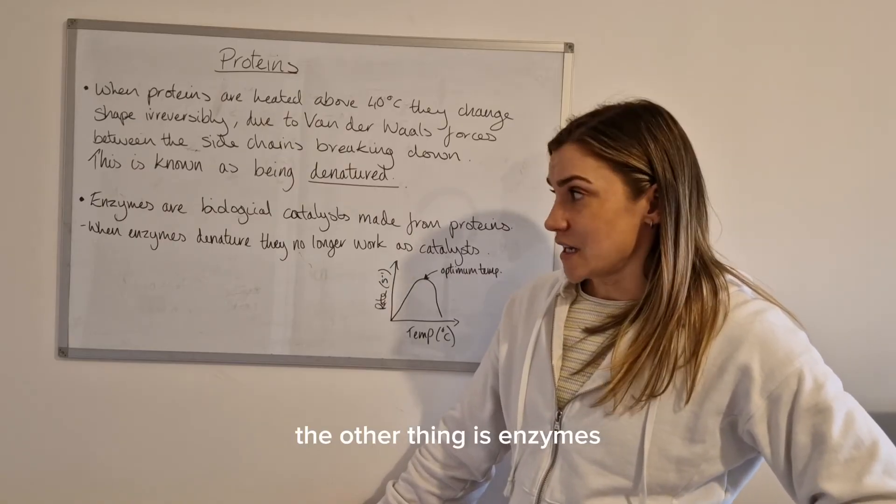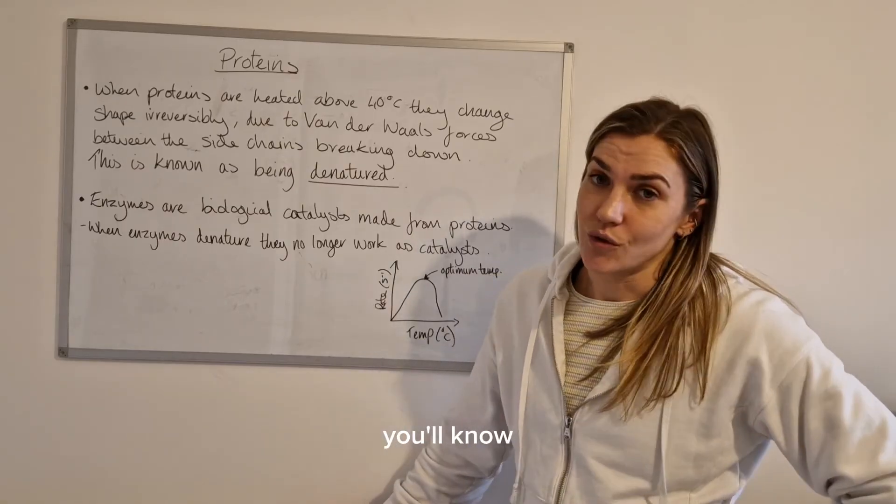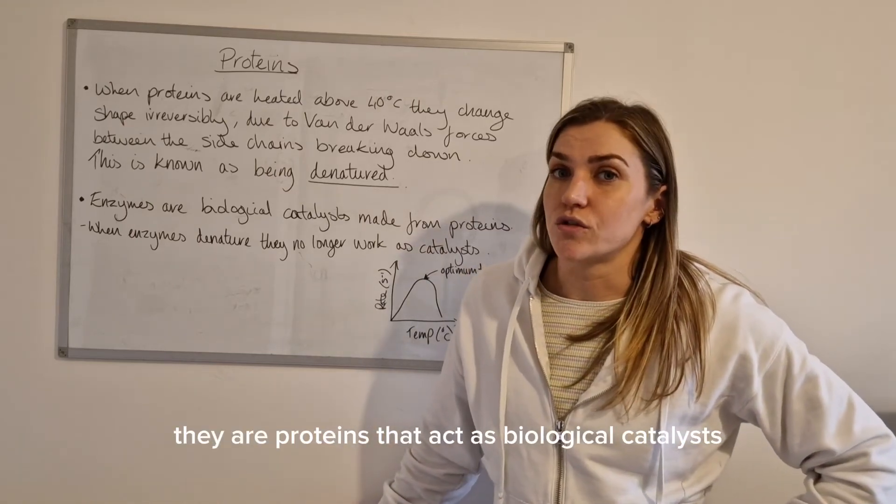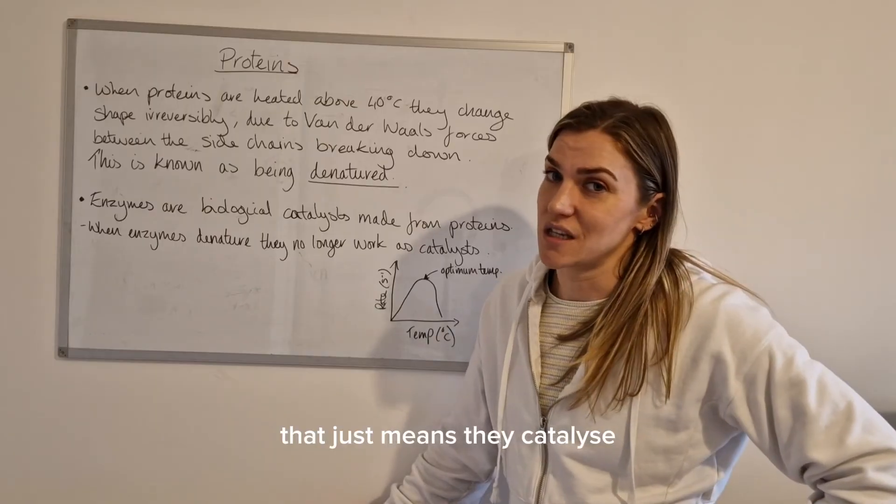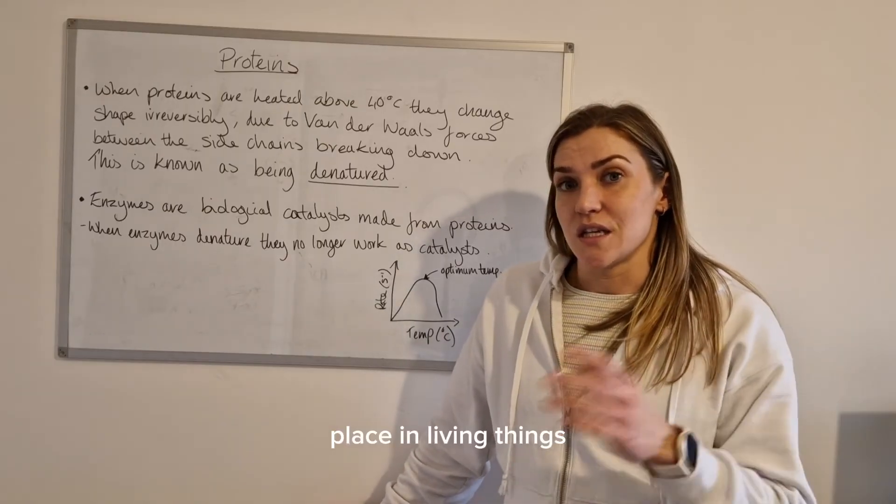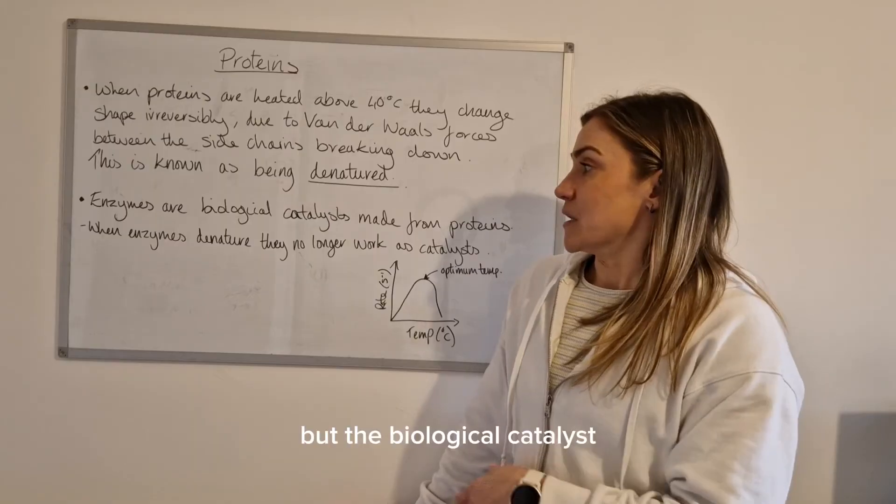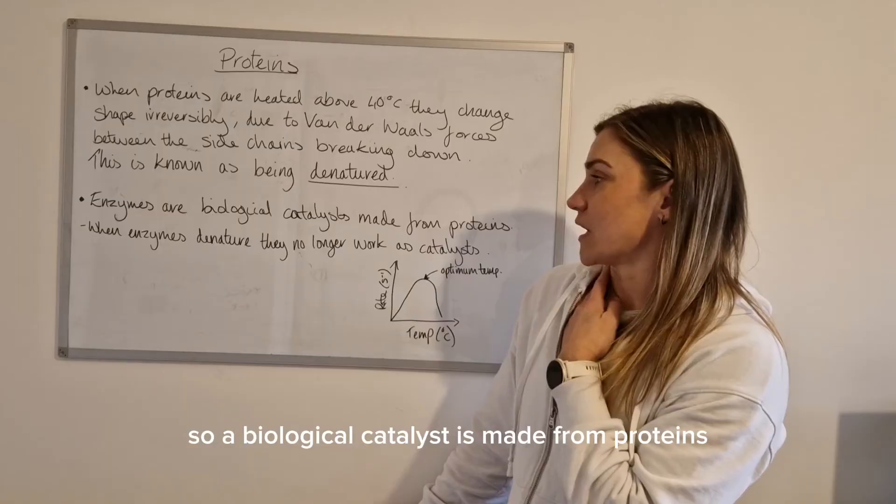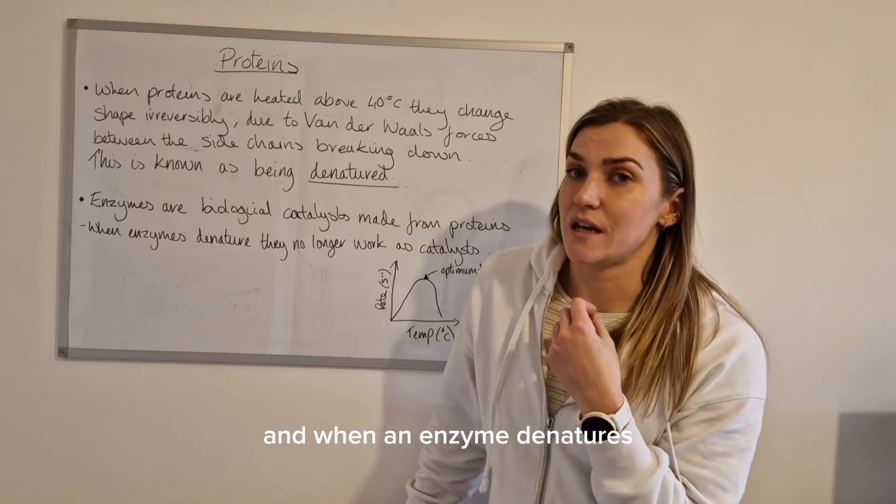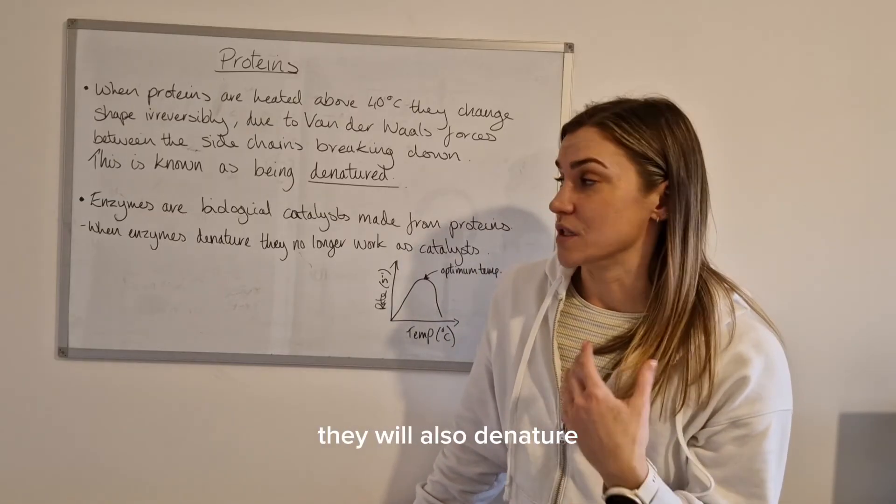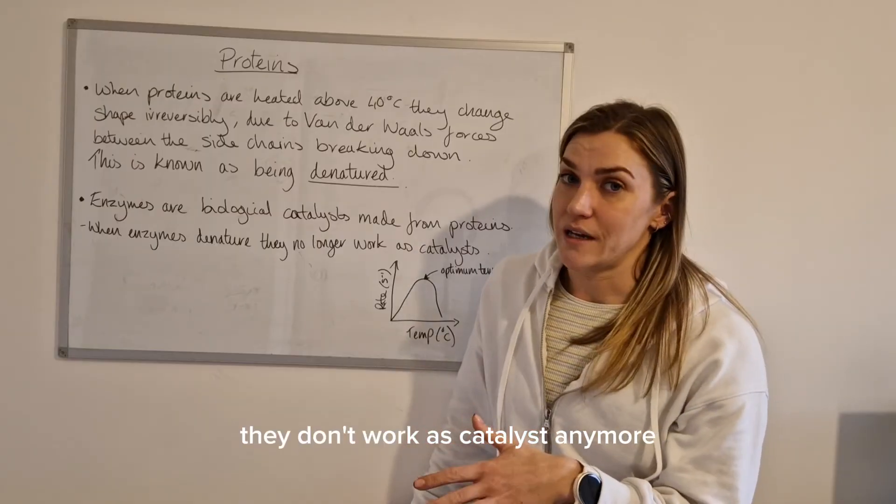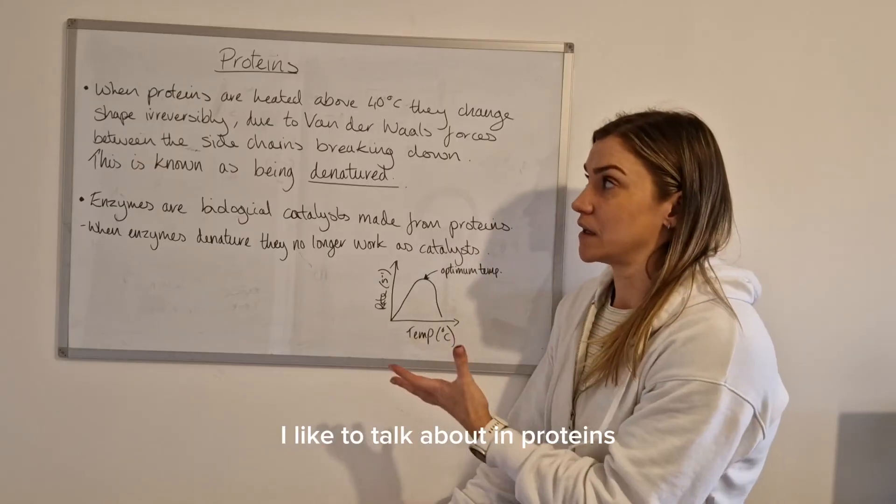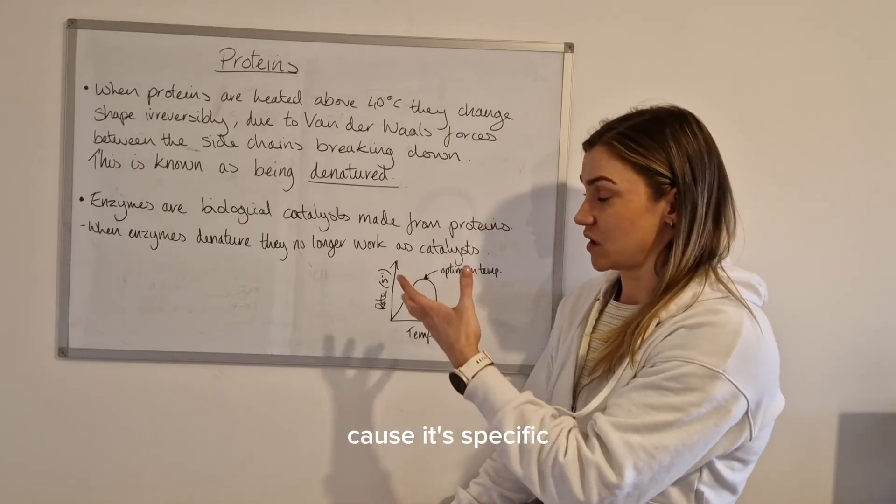The other thing is enzymes. So if you're a biologist you'll know all about these but if you're not they are proteins that act as biological catalysts. So that just means they catalyze reactions that take place in living things but the biological catalyst phrase is the one you want to remember. So they're biological catalysts made from proteins and when an enzyme denatures because they are proteins they will also denature. They don't work as catalysts anymore. So although this is technically part of the rates topic I like to talk about it in the proteins because it's specific in this context.